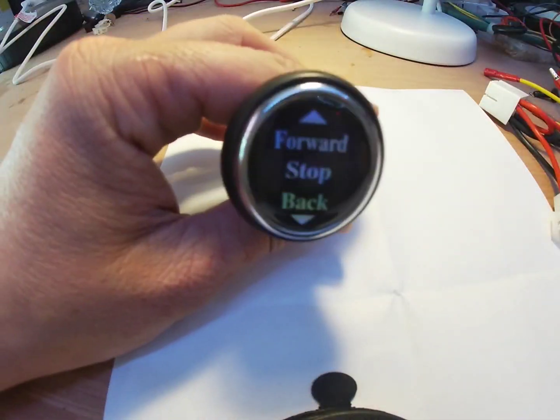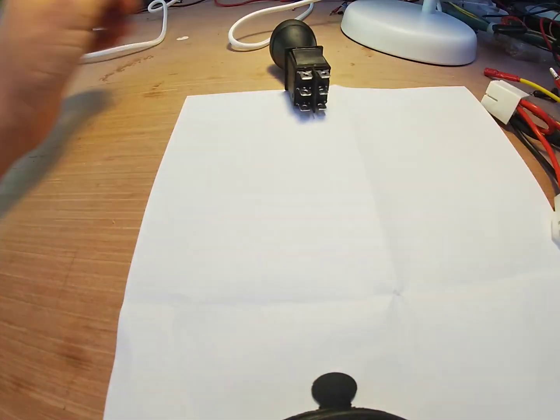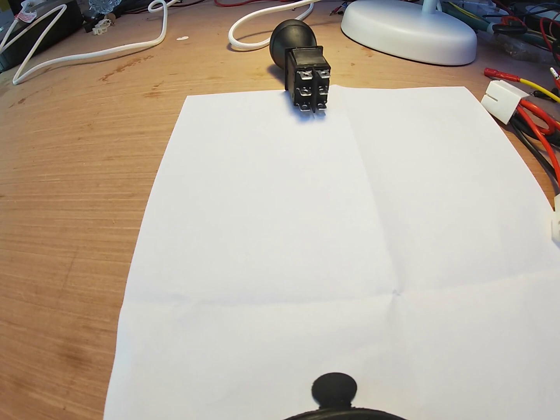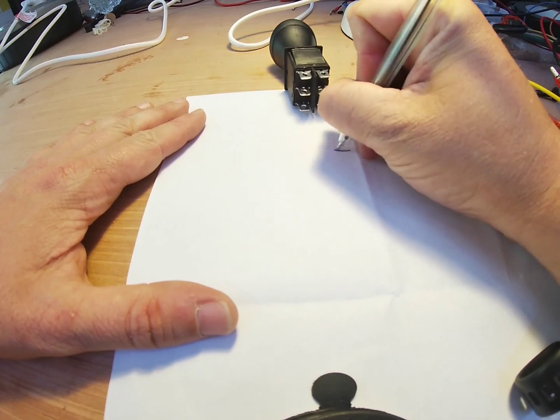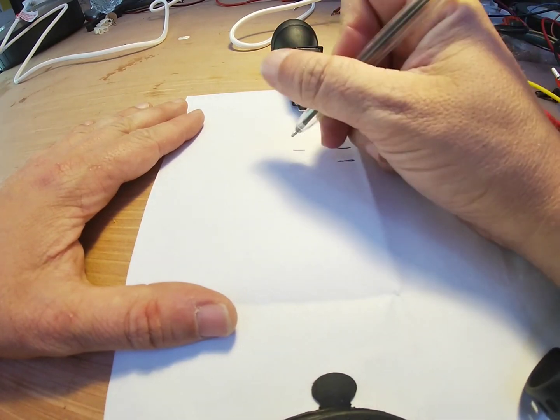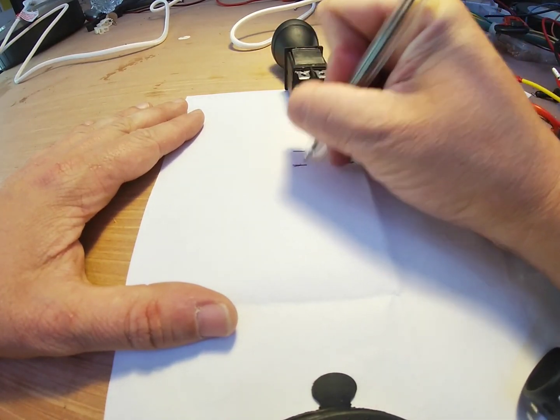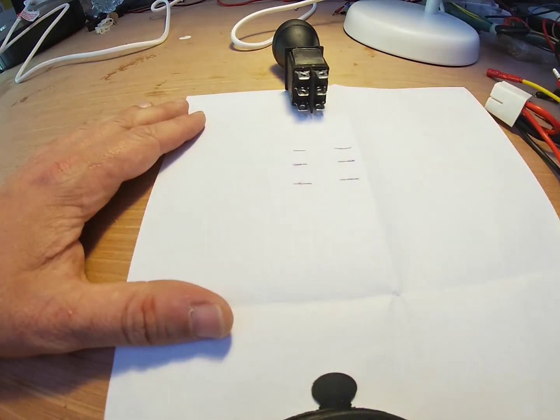We're going to take it this way: forward, stop, back. We're going to flip it and keep it that way so we can see. So we're going to draw out six pins on our piece of paper. Pin 1, 2, 3, 4, 5, 6.